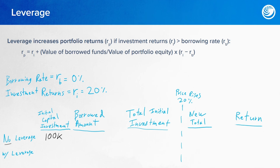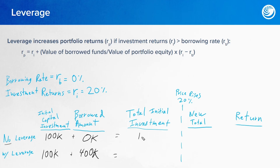In the no-leverage situation, we invest $100,000. With leverage, we also invest $100,000, but we additionally borrow $400,000. With no leverage, we wouldn't borrow at all. So our total initial investment is just $100,000 for the no-leverage situation, but we have $500,000 invested if we initially put down $100,000 and then borrow $400,000 more.